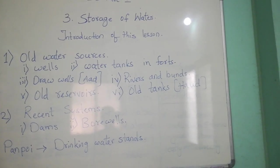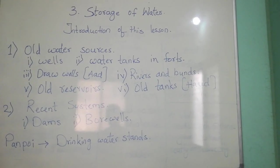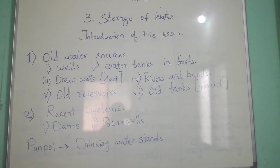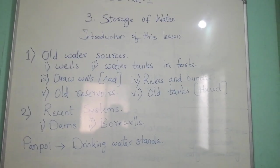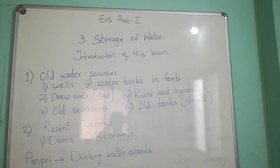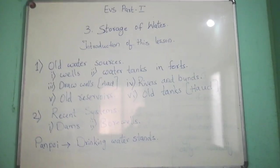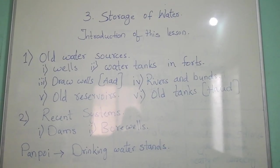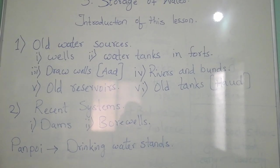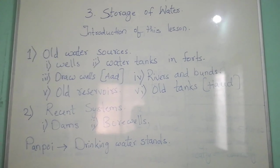The second recent system is bore wells. Earlier, wells were dug to reach the water underground, but it was not possible to draw deep-seated water. Now, with the help of electric pumps, it is possible to do so. Bore wells are dug for deep purposes — these wells are very deep but very narrow. In our houses, bore wells are there. With the help of electric pumps, we can take out the water.